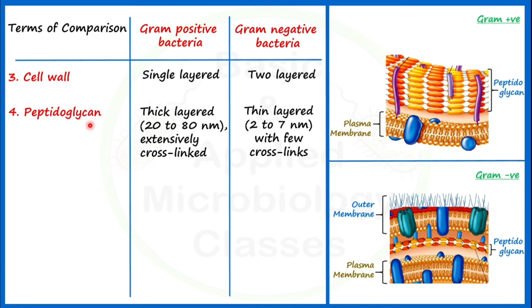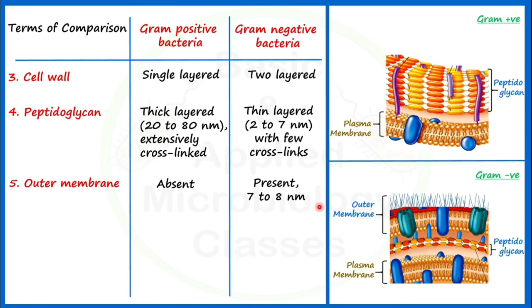Now the fifth point of difference: outer membrane. In case of gram positive bacteria, the outer membrane is absent. In case of gram negative bacteria, the outer membrane is present, and the thickness of the outer membrane in gram negative bacteria is around 7 to 8 nanometers.